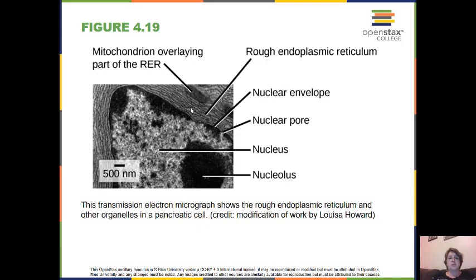You also have a smooth endoplasmic reticulum. The smooth ER is continuous with the rough ER but has very few or almost no ribosomes on it. Its function is to synthesize carbohydrates, lipids, and hormones, particularly steroid hormones. It also detoxifies medications and poisons, and in some cases, particularly in muscle cells, it stores calcium ions.